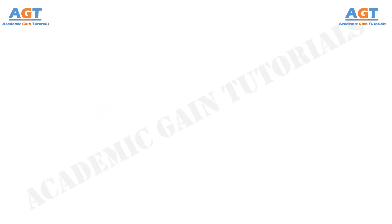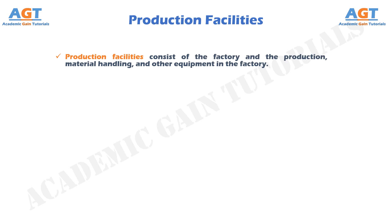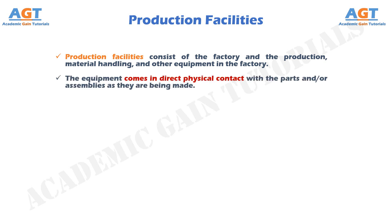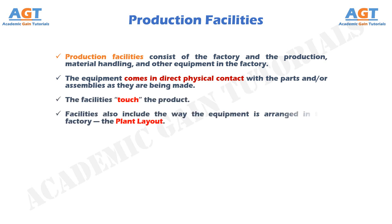Production facilities consist of the factory, the production equipment, material handling, and other equipment in the factory. The equipment comes in direct physical contact with the parts and/or assemblies as they are being made — the facilities touch the product. Facilities also include the way the equipment is arranged in the factory, which is called the plant layout.